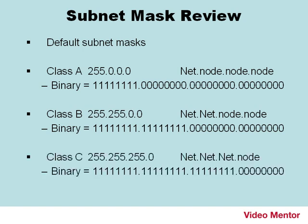And Class C — 255.255.255.0 — the first three octets deal with the network portion, and the last octet deals with the node or host portion. In binary, we have 24 ones and eight zeros, and this is suitable for small networks with a small amount of computers.